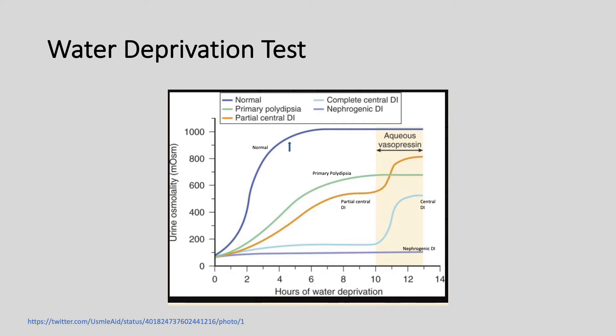In nephrogenic DI, shown in purple as the lowermost graph, urine osmolality does not rise much, if at all. And when aqueous vasopressin is given, nothing happens because of the resistance of the collecting tubule to vasopressin. In central DI, shown in light blue, you get the same minimal rise in urine osmolality initially, but when you give vasopressin or desmopressin, urine osmolality rises significantly.